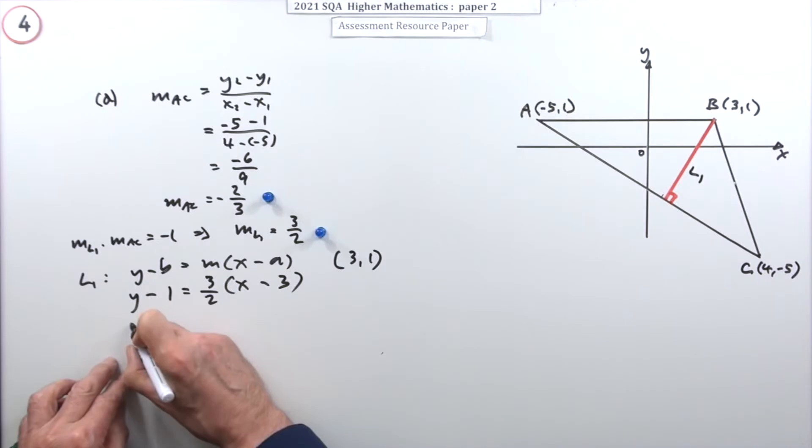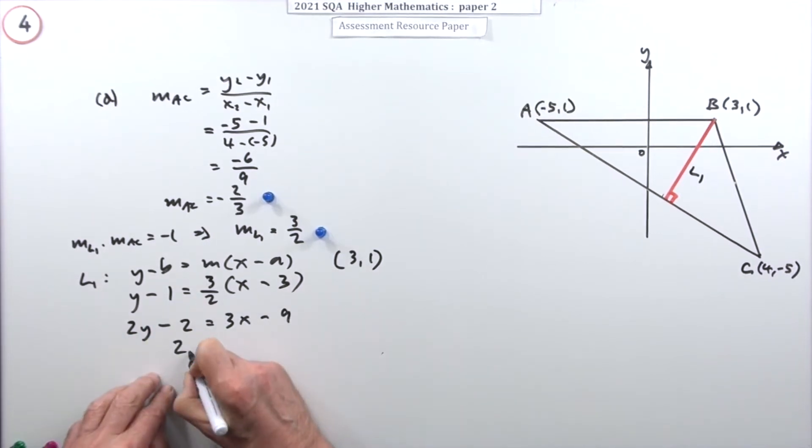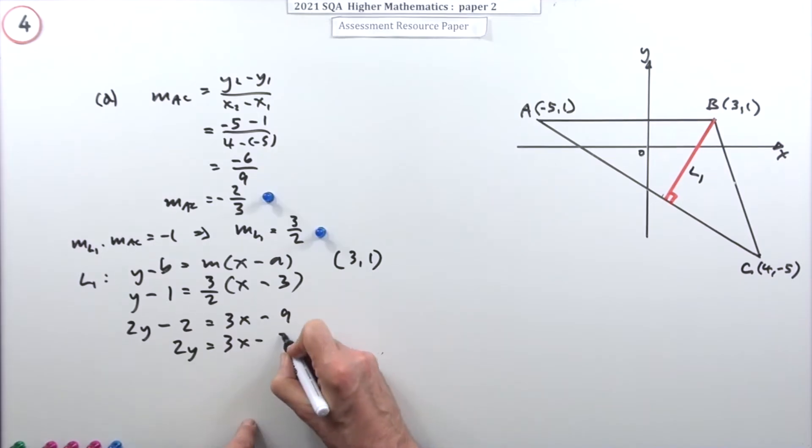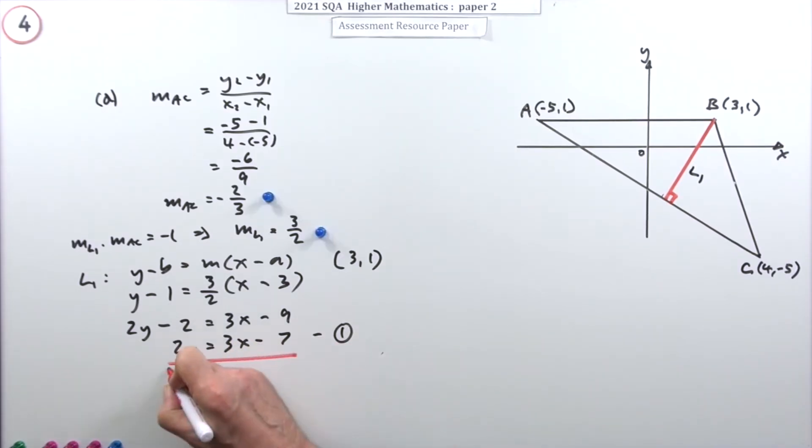Take that across and multiply: 2y minus 2 is 3(x minus 3). I'll just write that as 2y = 3x, take that across, minus 7. So that's line 1, I'll give it a name - yep, line 1. That's the third mark.